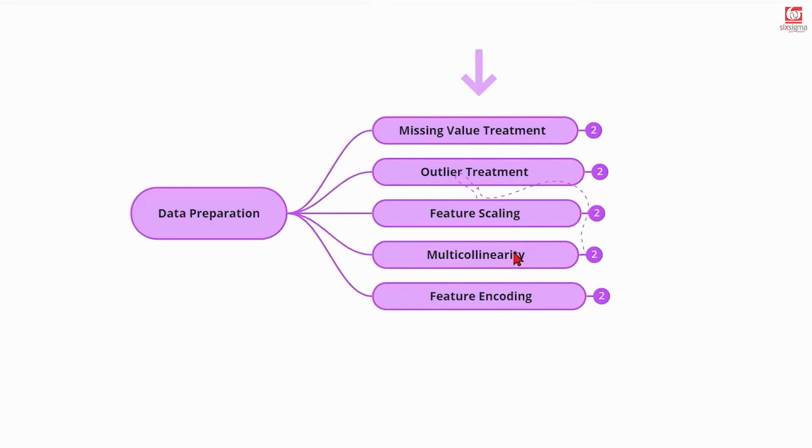You already see a kind of list here where you have missing value treatment, you have outlier treatment, feature scaling, multicollinearity, and feature encoding. Let's discuss each of these and understand them a little better.